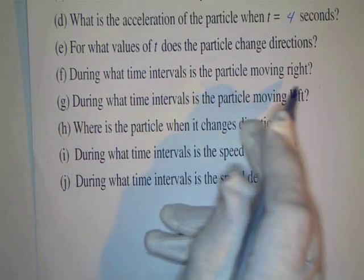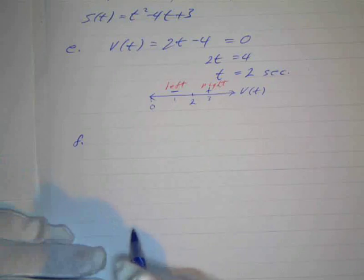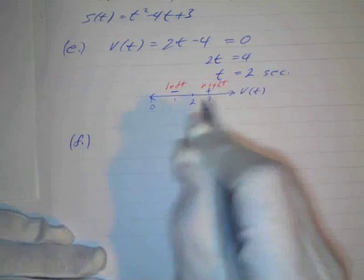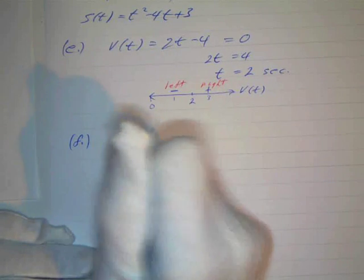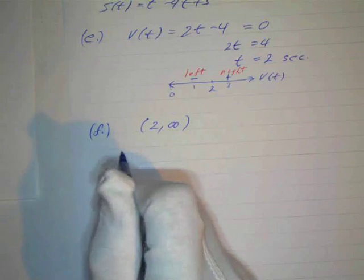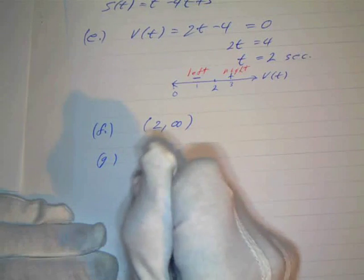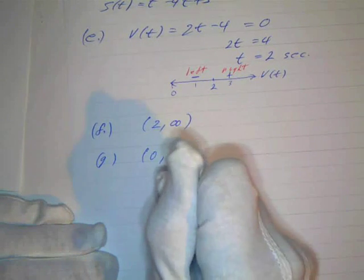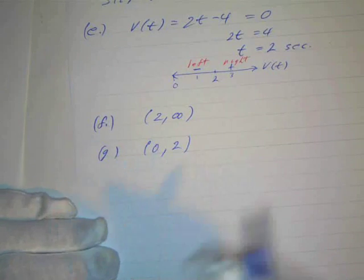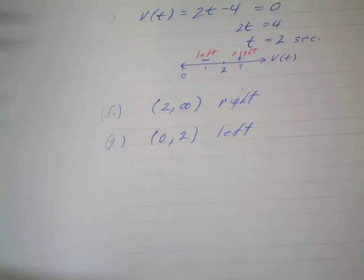We already have letter F from our line graph. Letter F asks: during what time intervals is the particle moving right? It's moving right when velocity is positive, so that time interval would be from 2 to infinity. And letter G is: during what time intervals is the particle moving left? That's going to be from 0 to 2. So those are easy answers from the sign line.